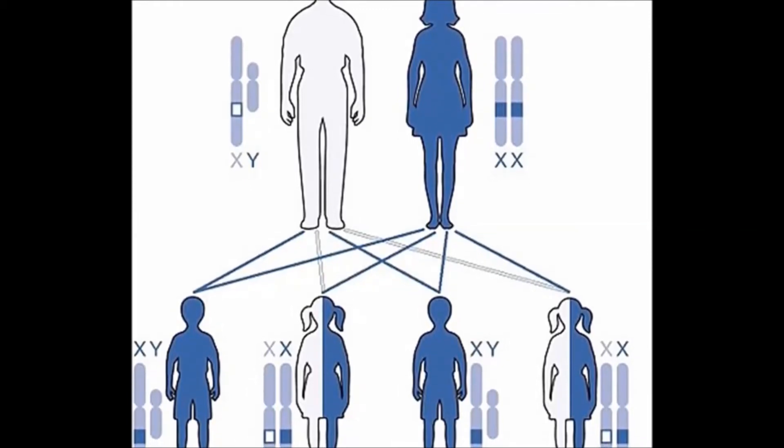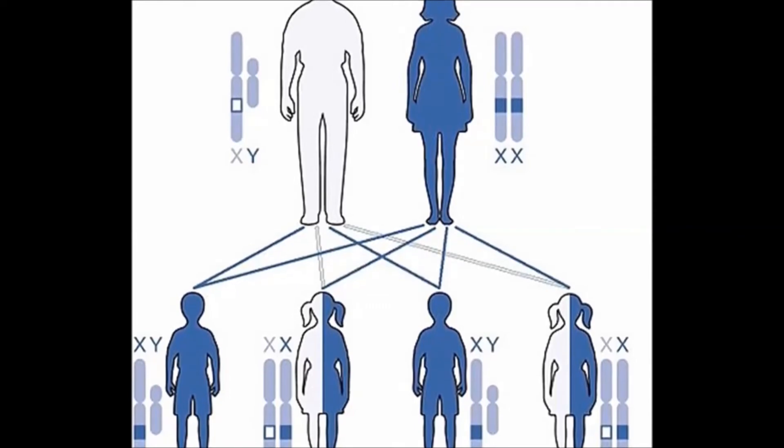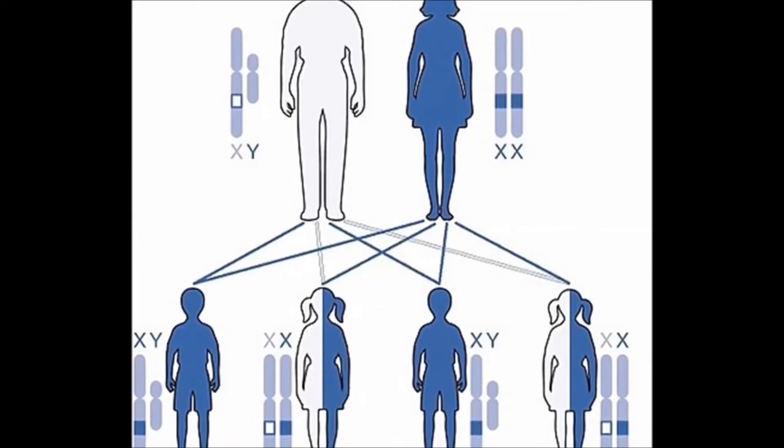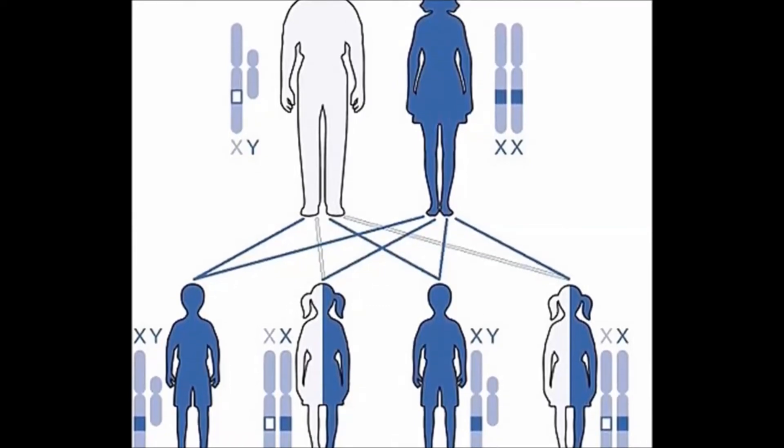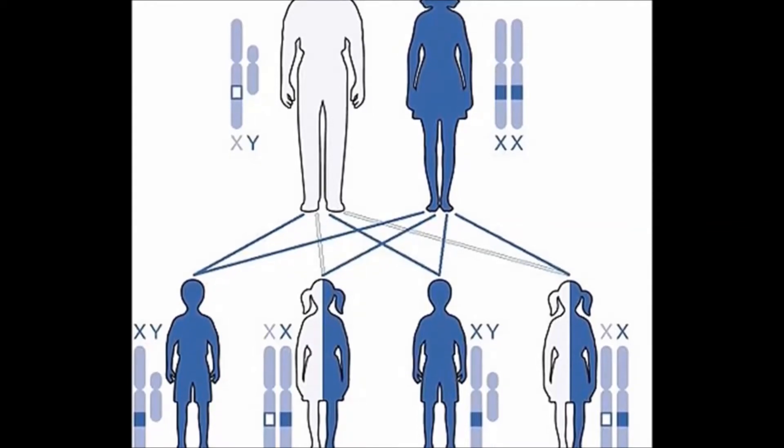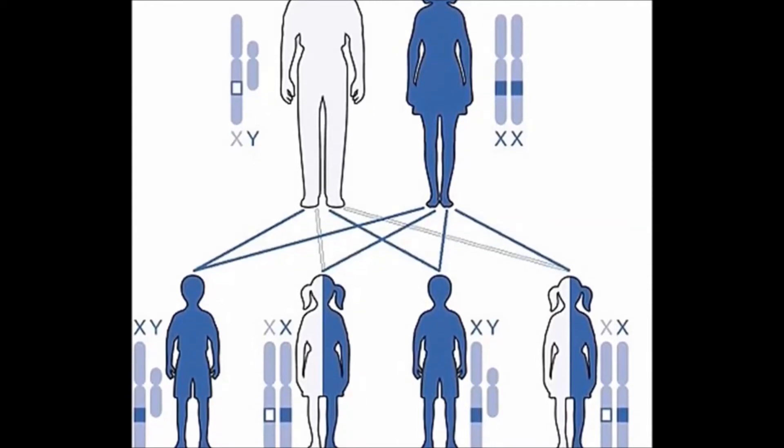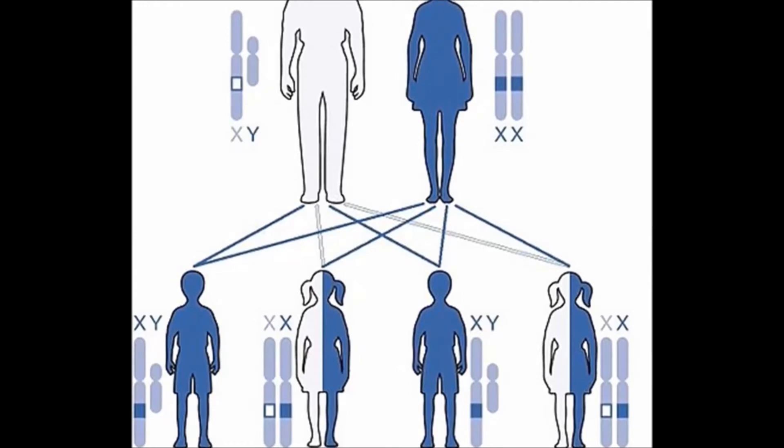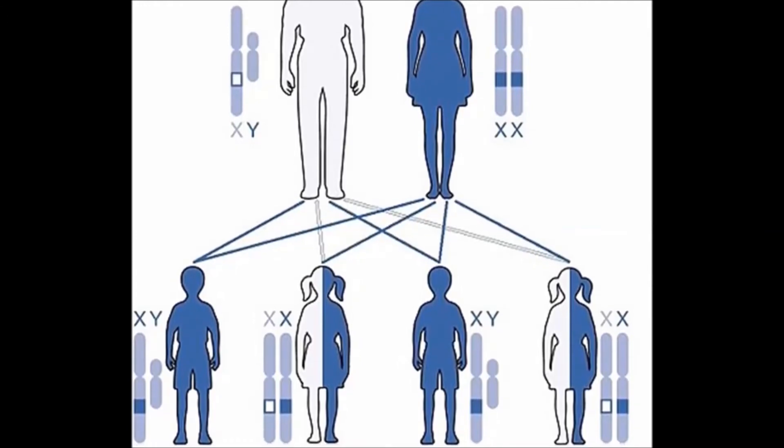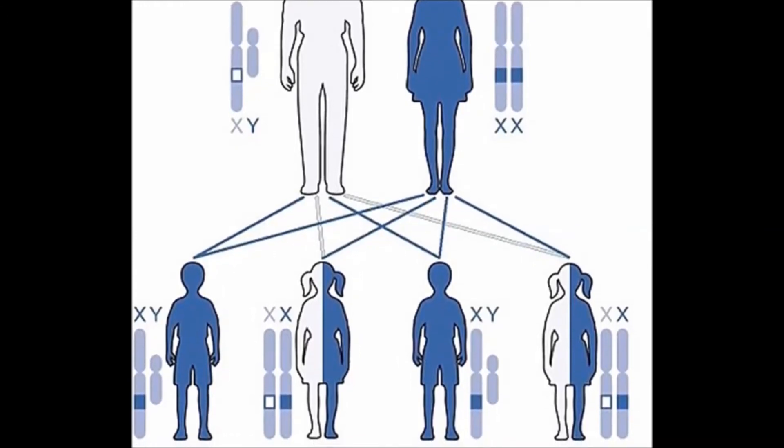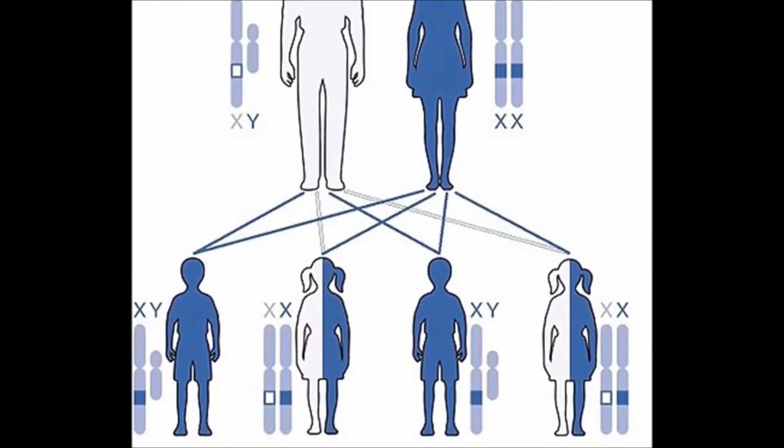Rarely, the condition is not inherited and occurs due to a random event during the formation of the egg or sperm or in early development. Also, although MeCP2 is usually duplicated on the X chromosome, in rare occurrences, the gene may be translocated to a completely different chromosome. In these cases, the symptoms are more severe.